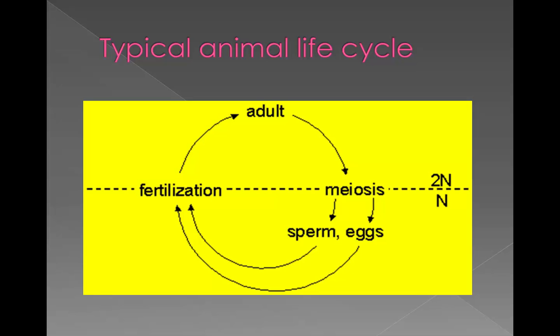In the typical animal life cycle, sperm and eggs are formed by meiosis and are haploid. The sperm fertilizes the egg, eventually producing a diploid adult, and it is simply a cycle that repeats.